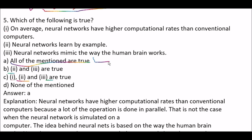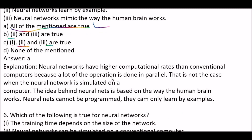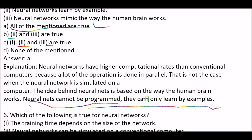All three statements are true. Neural networks have higher computational rates than conventional computers because a lot of the operations are done in parallel — though that is not the case when the neural network is simulated on a computer. The idea behind neural networks is based on the way the human brain works. And neural networks cannot be programmed; they can only learn by example.